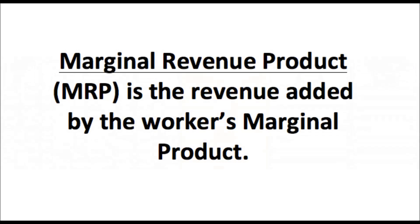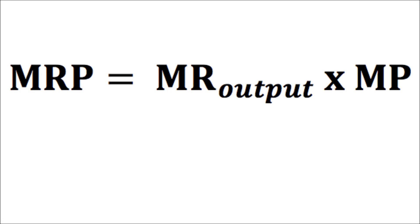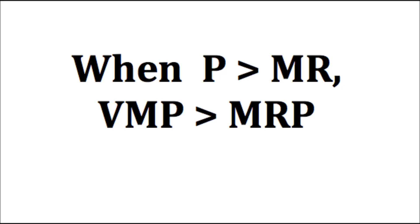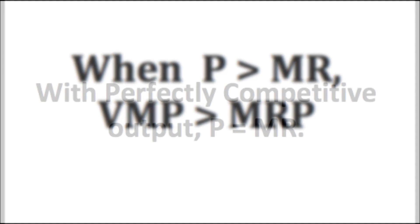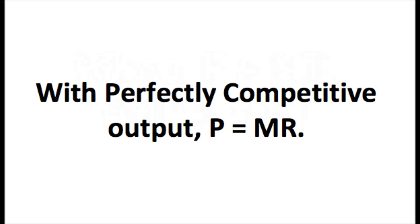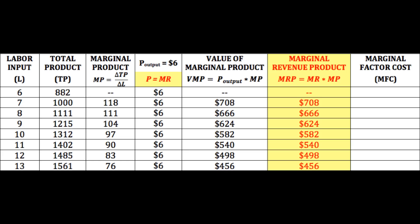The marginal revenue product, or MRP, the revenue added by the worker's marginal product, or marginal revenue times marginal product. From our experience with output market structures, episodes 25 through 30, we know that in most cases, price is greater than marginal revenue, so the value of the marginal product would be greater than the marginal revenue product. However, because we started with the assumption that the firm operates in a perfectly competitive output market, price is equal to marginal revenue, so the value of the marginal product, price times marginal product, and the marginal revenue product, marginal revenue times marginal product, are the same.